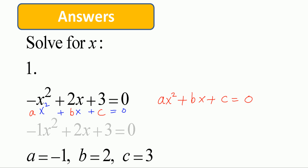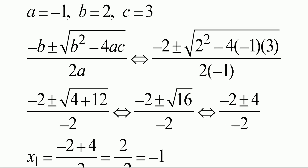So when you compare, you see that a is equal to negative 1, b is equal to positive 2, c is equal to positive 3.